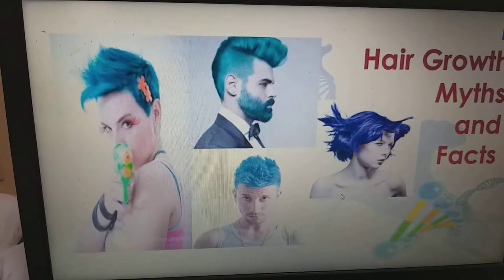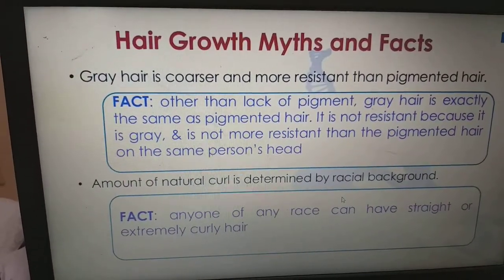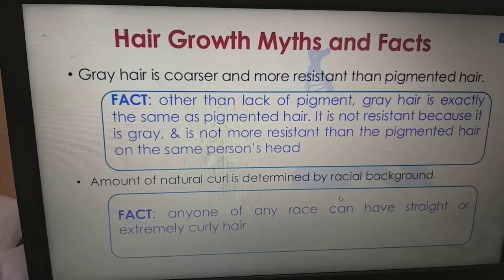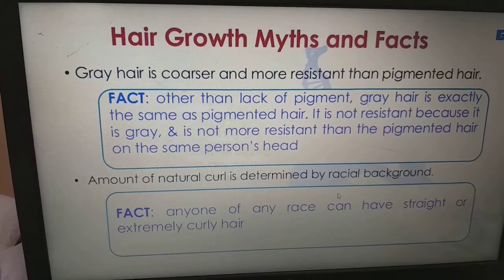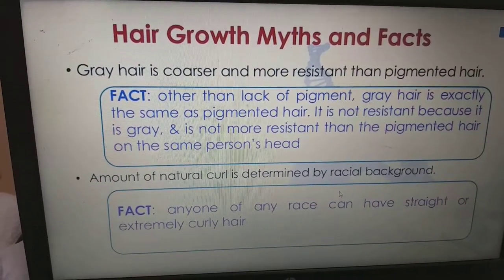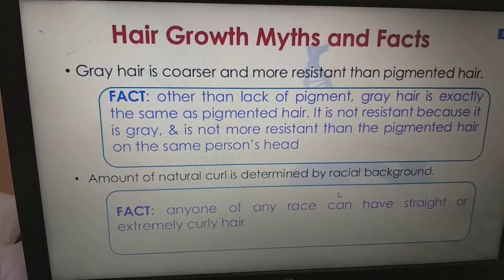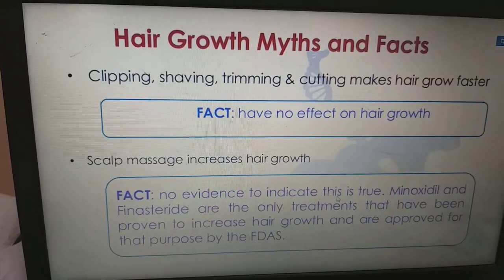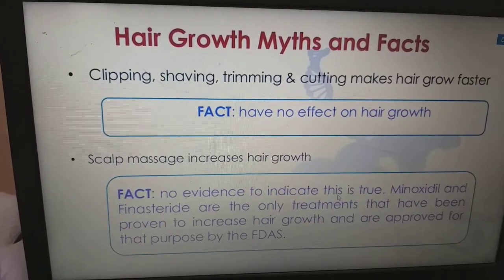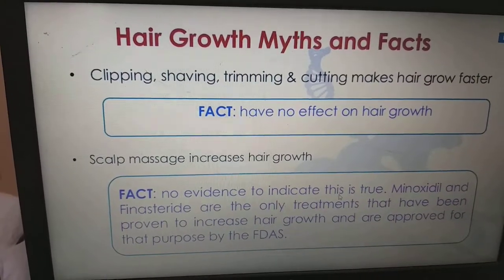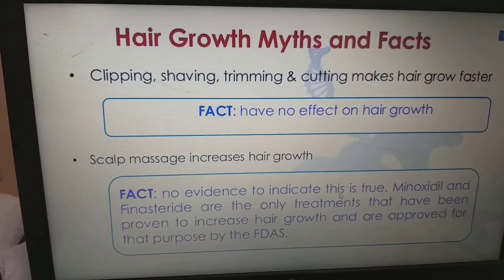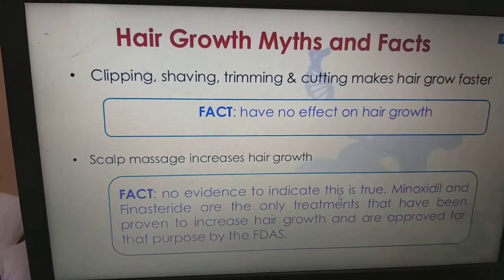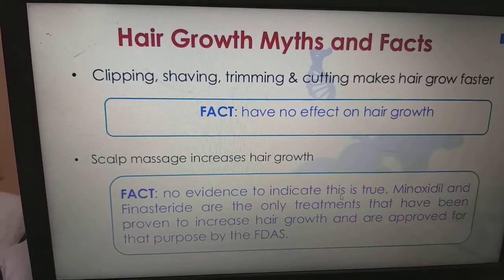Coming to hair growth myths and facts. Myth: gray hair is coarser and more resistant than pigmented hair. Fact: other than the lack of pigment, gray hair is exactly the same as pigmented hair — it is not more resistant than the pigmented hair on the same person's head. Myth: the amount of natural curl is determined by racial background. Fact: anyone of any race can have straight or extremely curled hair. Myth: clipping, shaving, trimming and cutting makes hair grow faster. Fact: there is no effect on hair growth from cutting, shaving, or trimming, and scalp massage does not increase hair growth either — there is no evidence to indicate that is true. Minoxidil and finasteride are the only treatments proven to increase hair growth and approved for these purposes by the FDA — the Food and Drug Administration.